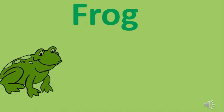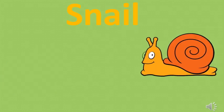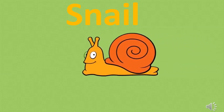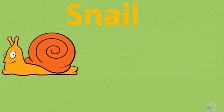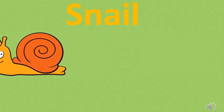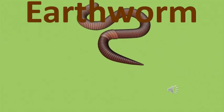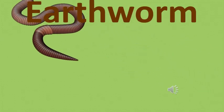Hoppy hop, hoppy hop, froggy won't you ever stop! A frog — very common creature of monsoon season. Snail — frequently seen during rainy season. This is an earthworm — very frequently seen during monsoon season.